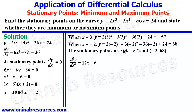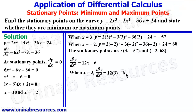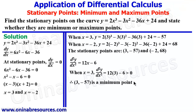We substitute the values of x to determine minimum or maximum. When x is equal to 3, d²y/dx² will be 12 times 3 minus 6, which is 36 minus 6, giving us 30, which is greater than 0. Since it is greater than 0, this point is a minimum point. Therefore, (3, negative 57) is a minimum point.